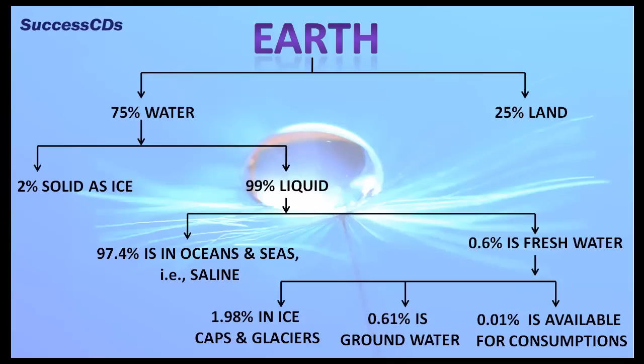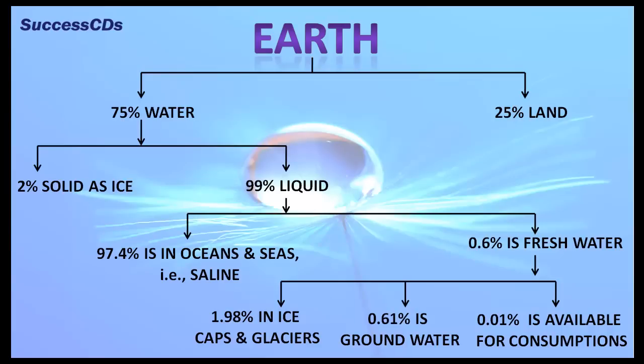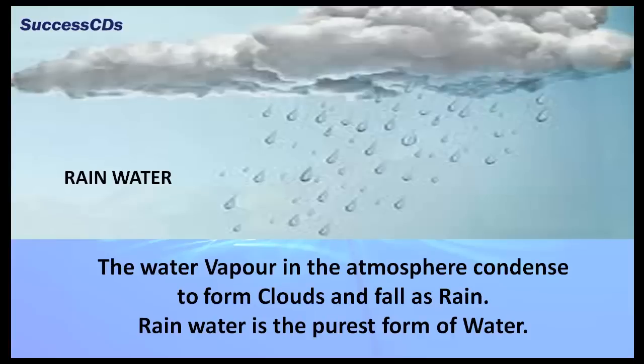The major sources of water are rainwater, surface water, and groundwater. The water vapor in the atmosphere condenses to form clouds and falls as rain. Rainwater is the purest form of water.